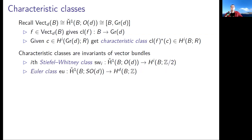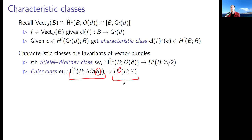Two key examples: the Stiefel-Whitney classes w_i take a vector bundle and return an element in H^i(b; Z/2). For i greater than d you always get zero. The Euler class is defined for oriented vector bundles — replace the orthogonal group with SO(d) — and takes an oriented rank-d bundle to a class in H^d(b; Z).